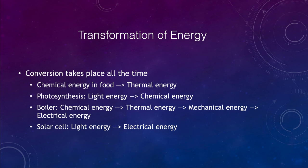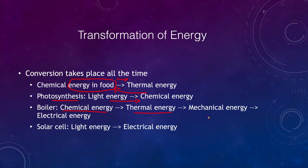We see energy transformation all the time. Energy stored in food is chemical energy, which can be converted into thermal energy. Photosynthesis converts light energy into chemical energy. A boiler converts chemical energy from fuel — wood, coal, or gas — into thermal energy, which may turn a turbine to generate electrical energy. A solar cell takes light energy and converts it directly to electrical energy. There are many ways to transform energy from one form to another.